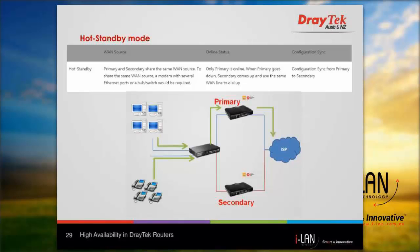With hot standby mode, both the primary and secondary router share the same WAN source — a modem with several internet ports, or a switch, is required. The primary router is online; when it goes down, the secondary router will come up and use the same WAN connection to connect to the internet. The secondary router is synchronized to the primary router's configuration.